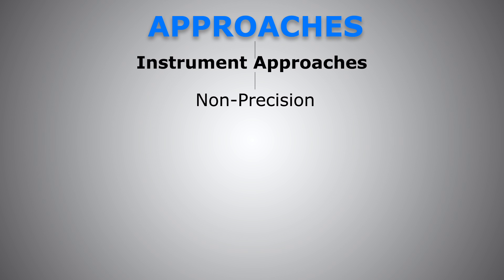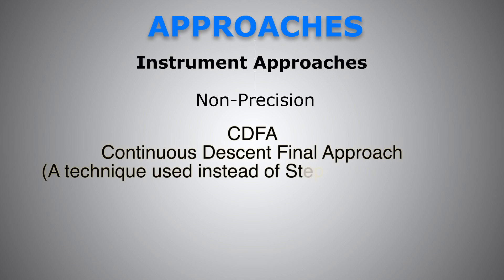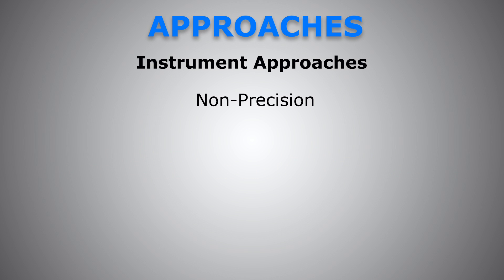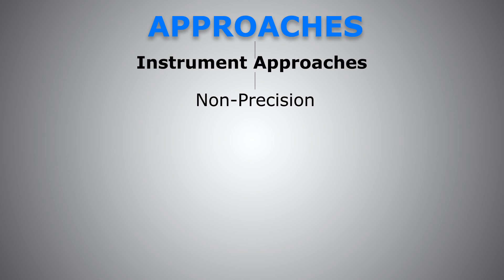We have non-precision approaches — standard instrument approach procedures with only lateral guidance from the localizer signal. Unlike precision approaches, vertical guidance is not provided. You either perform a series of step-down altitudes until you reach the predetermined MDA, the minimum descent altitude, and fly up to your missed approach point. If you have the runway in sight or its environment, then you commit to land; otherwise, you go around. Or, in the case of a CDFA technique — continuous descent final approach — you pre-calculate your rate of descent according to your ground speed or the glide path angle published on that non-precision approach procedure plate. Then, at the final approach fix or final approach point, you start a descent at the pre-calculated rate of descent all the way down to your MDA.